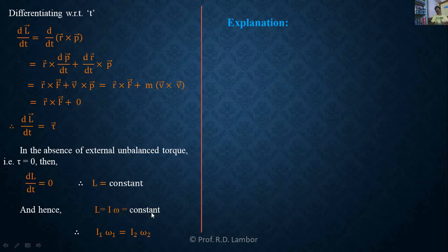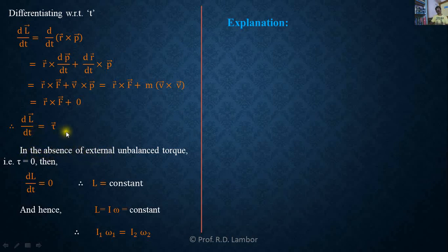According to the statement, in the absence of external unbalanced torque, the angular momentum of a rotating body always remains constant. The torque acting on a rotating body is equal to the rate of change of angular momentum with respect to time. If this torque is absent, that is torque equals zero, then the rate of change of angular momentum equals zero, which means angular momentum L = Iω is constant.